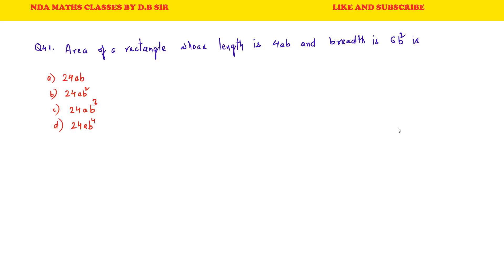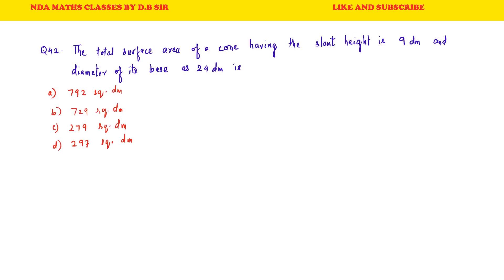Question 41: Area of a rectangle whose length is 4AB and breadth is 6B squared is — area equals L into B. Length is 4AB and breadth is 6B squared. Multiplying both: 4 × 6 = 24, and the power of B becomes 3. So the area is 24AB³. C is the correct answer to this question.